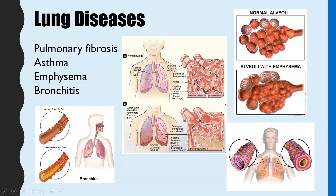We've got the normal alveoli of a healthy person compared to the alveoli of someone with emphysema. This is typically caused by smoking, and what happens is the alveoli walls start to break down. So instead of having millions of air sacs and alveoli in each lung, you end up with far fewer and much larger sacs. As a result, you have a smaller surface area for gas exchange and you're not getting enough oxygen diffusing into the lungs and enough carbon dioxide diffusing out.